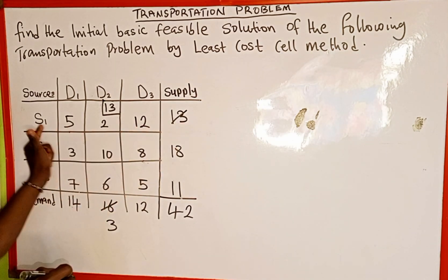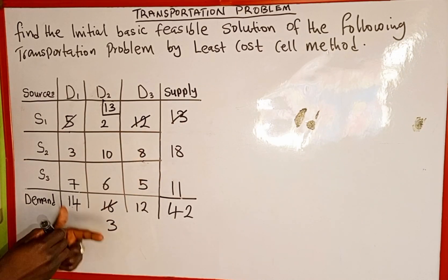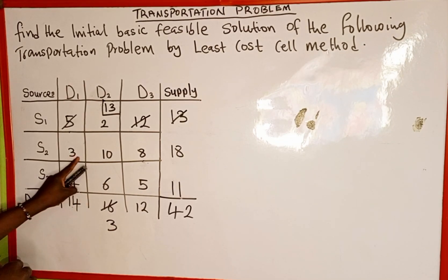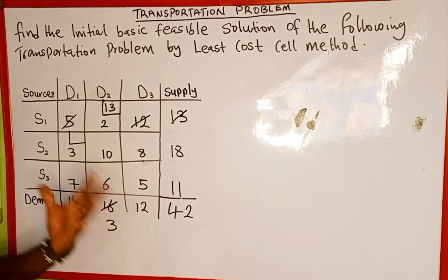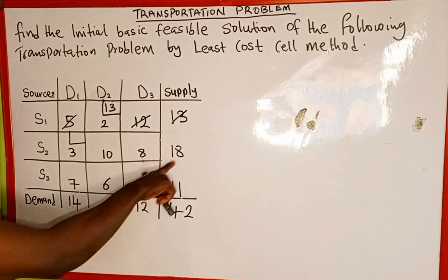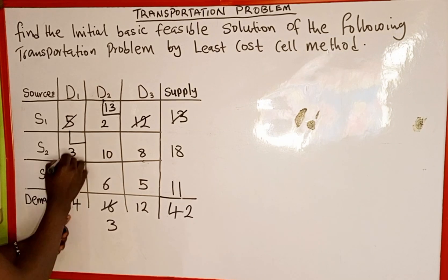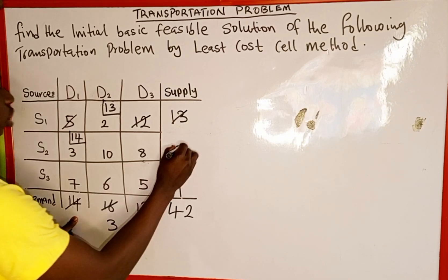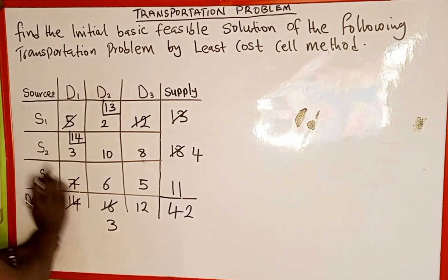Next, we check the remaining undeleted cells for the least value. The least is 3. We compare the supply and demand corresponding to cell 3: supply is 18 and demand is 14. The minimum is 14, so we allocate 14 here. We cancel demand of 14, and 18 minus 14 leaves 4 remaining supply. We can delete the remaining value in that column, which is just 7.